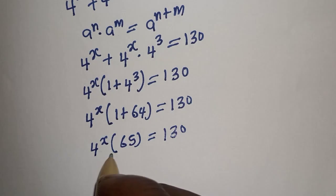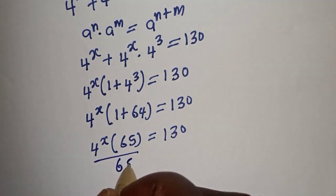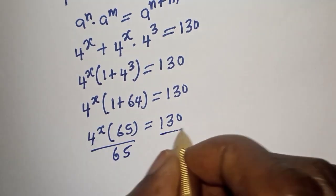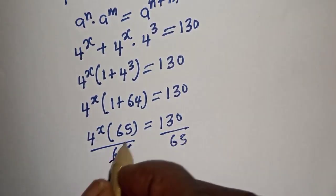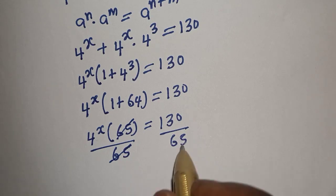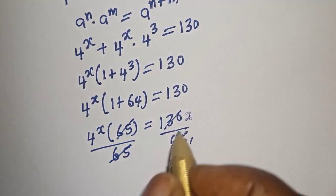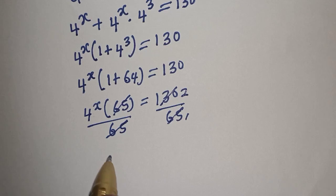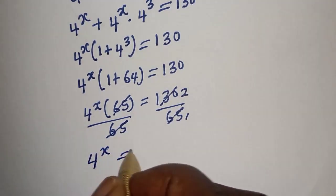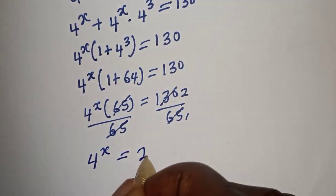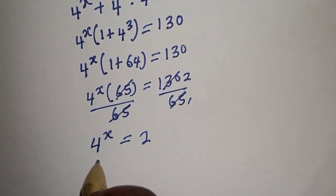Let's divide both sides of the equation by 65. The 65 cancels on the left side, giving us 4 raised to power s is equal to 130 divided by 65, which equals 2. But we are looking for the value of s.